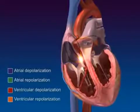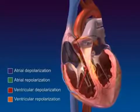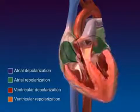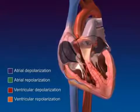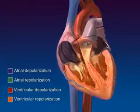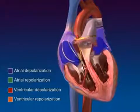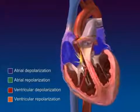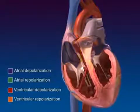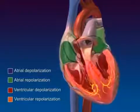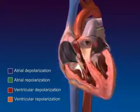Depolarization triggers contraction. Repolarization triggers relaxation. The swift spread of the impulse through the specialized conduction system ensures that the ventricles become excited and contract as a unit.